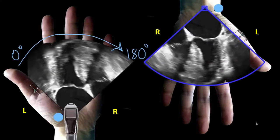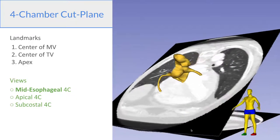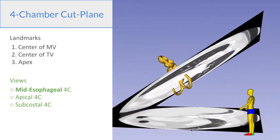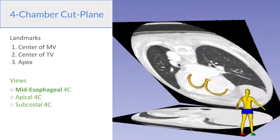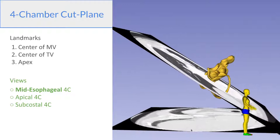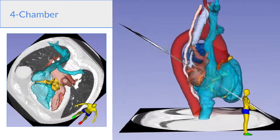And to cause further confusion, we typically look at these images rotated, so that the left heart is seen on the right, and the right heart is seen on the left. So we're going to look at the three major cut planes. The first one is the four-chamber cut plane, the landmarks for which are the center of the mitral valve, the center of the tricuspid valve, and the apex. In TEE, we only have the mid-esophageal window, but in transthoracic echo, we also have the apical and subcostal windows.